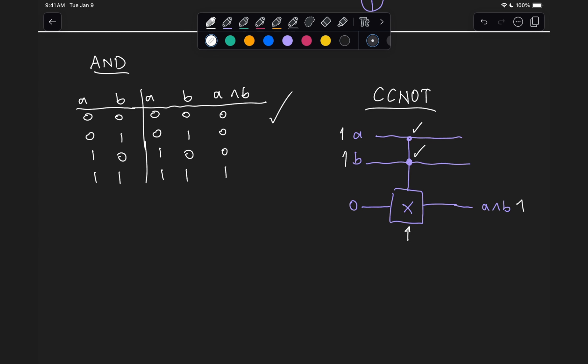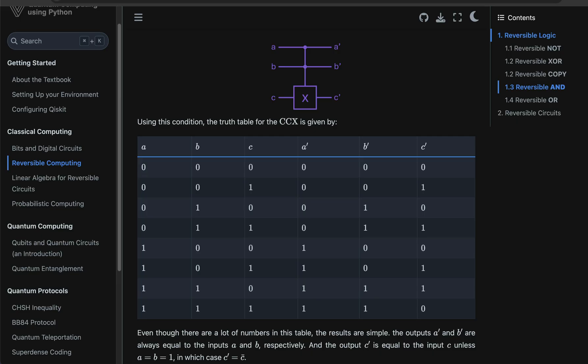We can check that this truth table matches the description of this circuit. Now, it is important to keep in mind that this control-control-X gate is not a reversible AND gate, but rather the reversible AND gate is a specific case of the control-control-X gate where we have initialized that last bit to zero. But in general, the input of a control-control-X gate could take both values of zero or one. So this will be the full truth table for that particular gate. Interestingly, if you were to initialize this value of C to one, then what we get is actually the negated output of an AND gate.